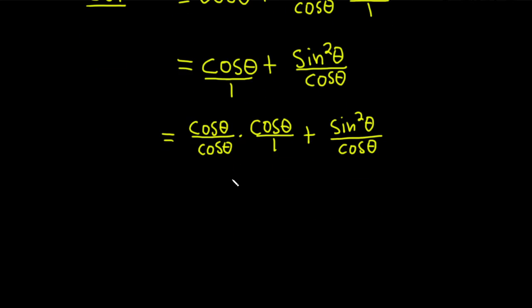Now this is equal to cosine times cosine is cosine squared. We have cosine squared theta over cosine theta, plus sine squared theta over cosine theta.